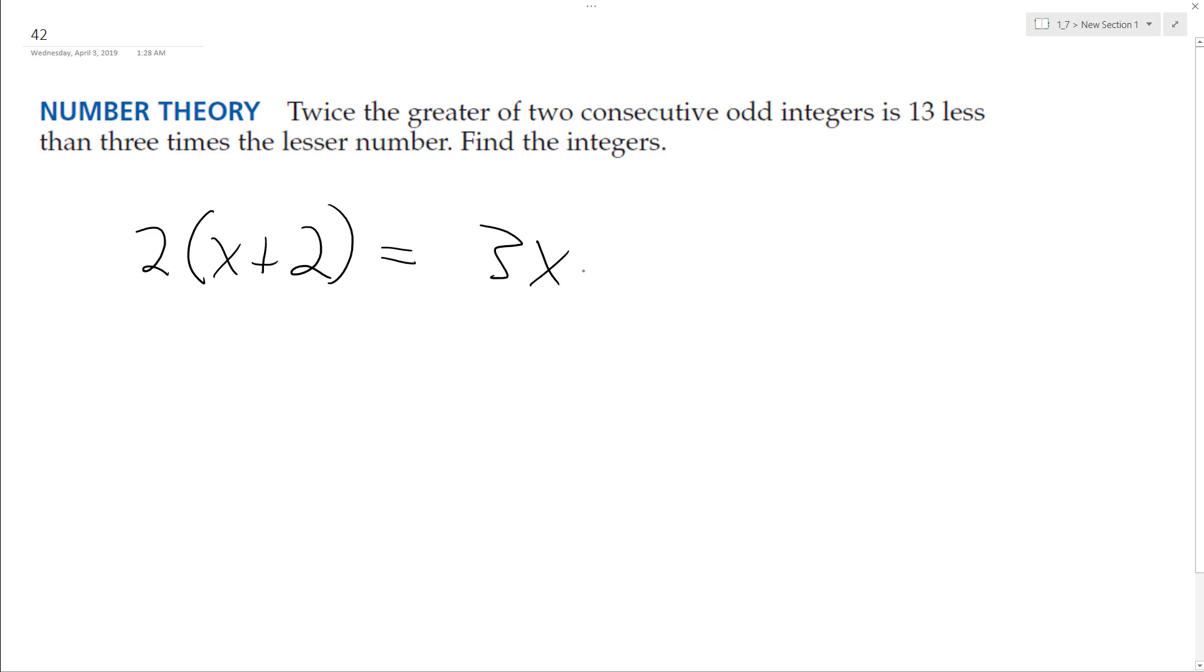So the lesser is just going to be x, so 13 less than three times x. The reason we subtract 13 is to get it equal, so let's go ahead and solve.